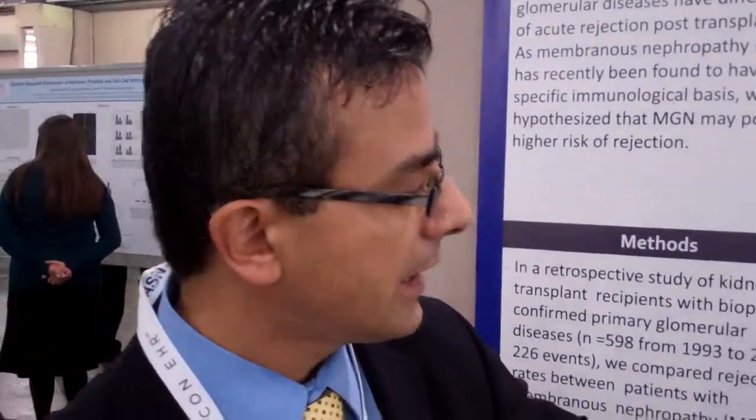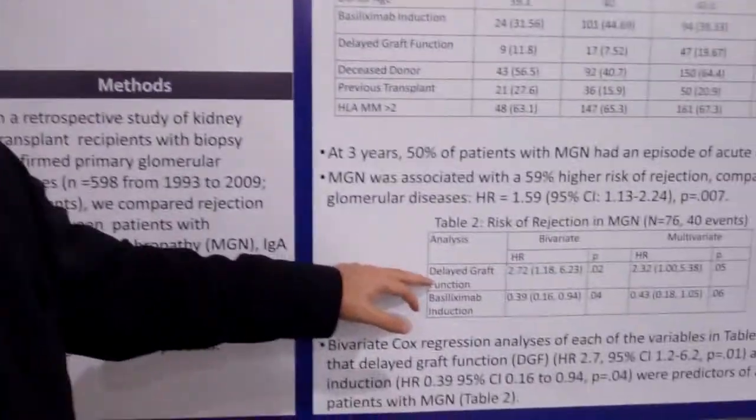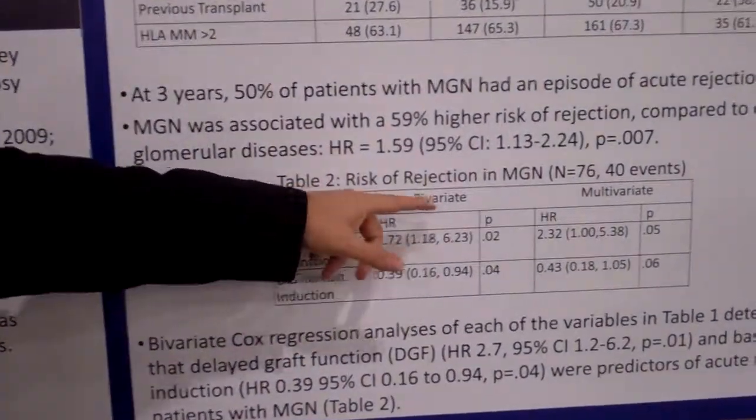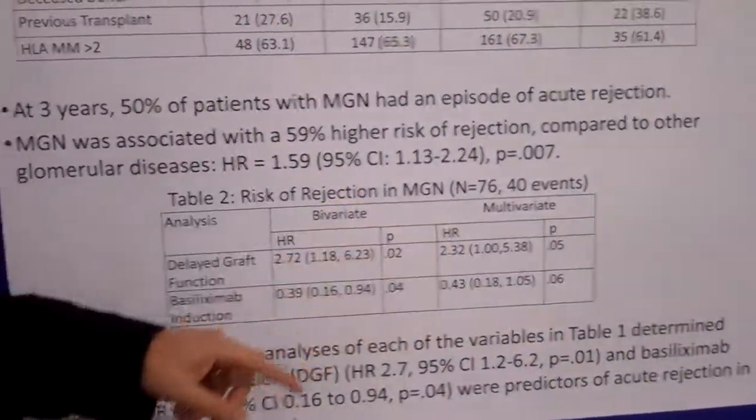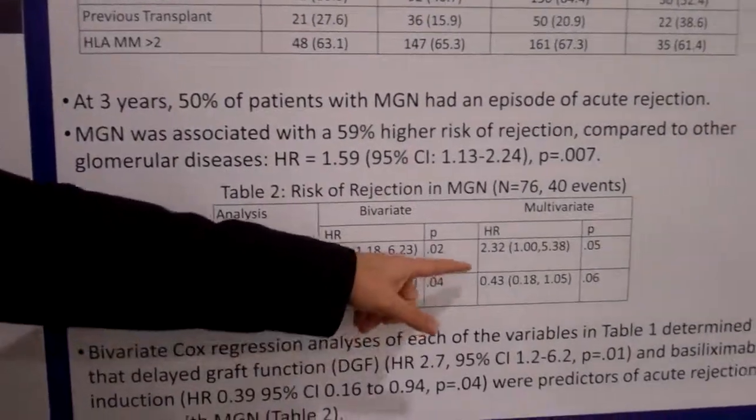We looked at risk factors for acute rejection in membranous glomerulonephritis. It turned out that delayed graft function, in both bivariate and multivariate analysis, was a significant risk factor associated with a 2.3 times greater risk of rejection, whereas induction with basiliximab was protective in bivariate analysis.